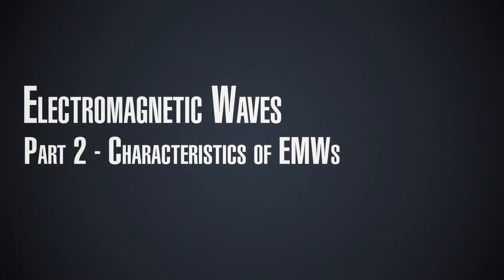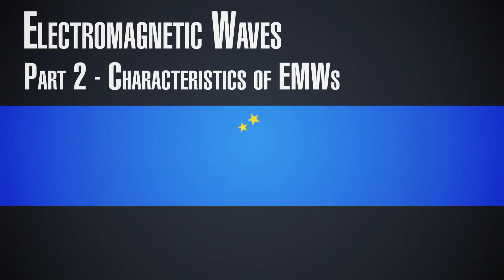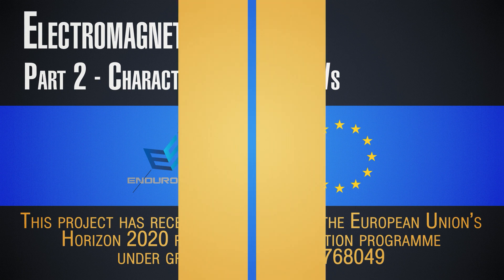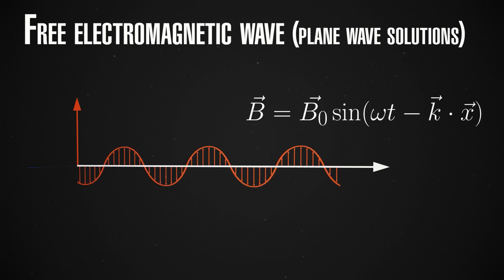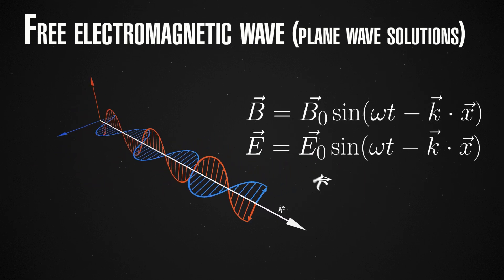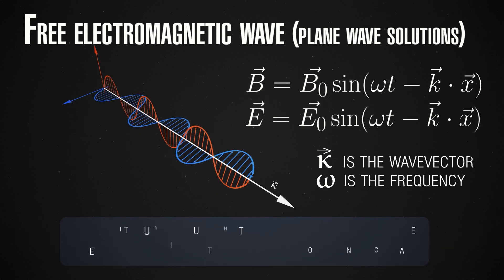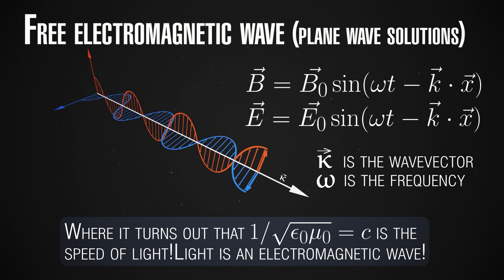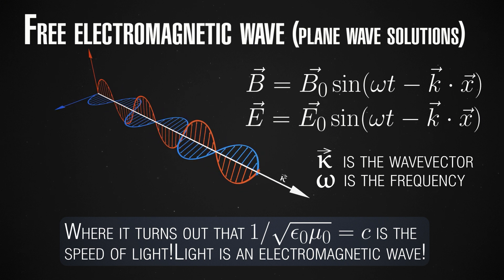We saw that the vacuum Maxwell equations give rise to wave-like solutions, but what we haven't seen yet is what exactly are the properties of these waves and how we can describe them. Taking the simplest form of the solution — sinusoidal waves for the electric and magnetic field — if we plug these expressions back into the vacuum Maxwell equations, we get relations between the vectors, the wavelength, the frequency, omega and k. We will not do this here thoroughly; you can look at the supplementary material for a step-by-step derivation. What we learn is that an electromagnetic wave is a transverse wave.